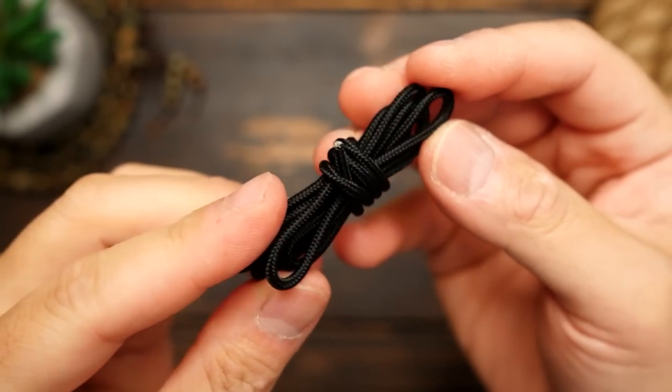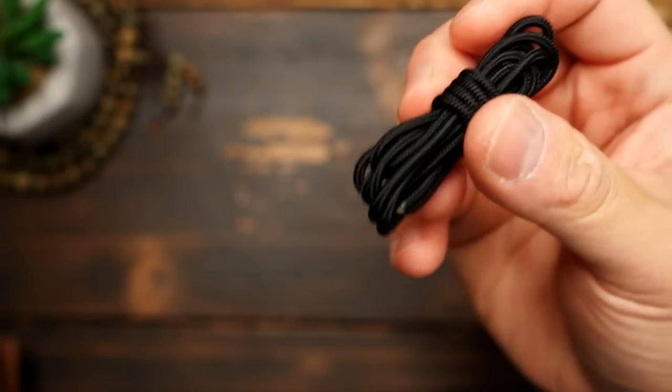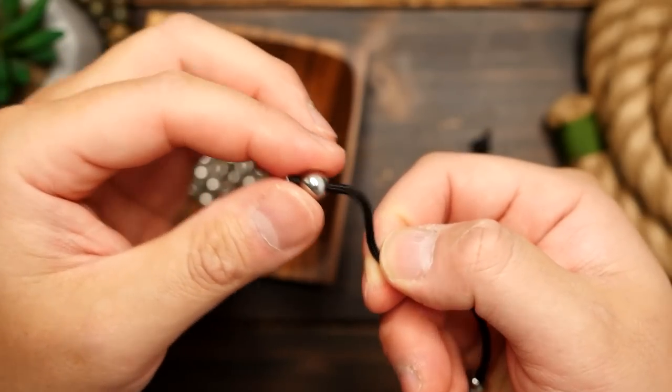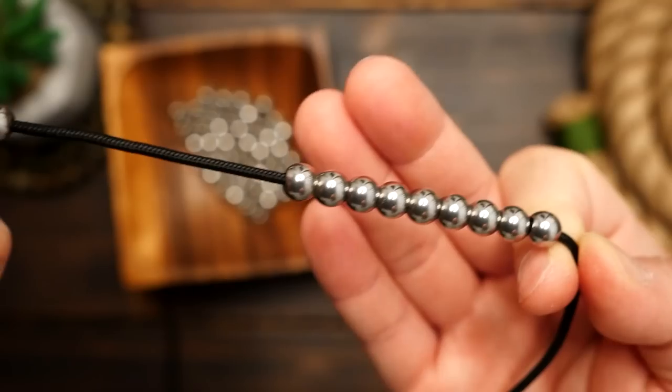I'm going to take some 275 paracord. I used about three feet. And I got these eight millimeter stainless steel beads. And I'm going to feed 48 of them onto this piece of paracord.